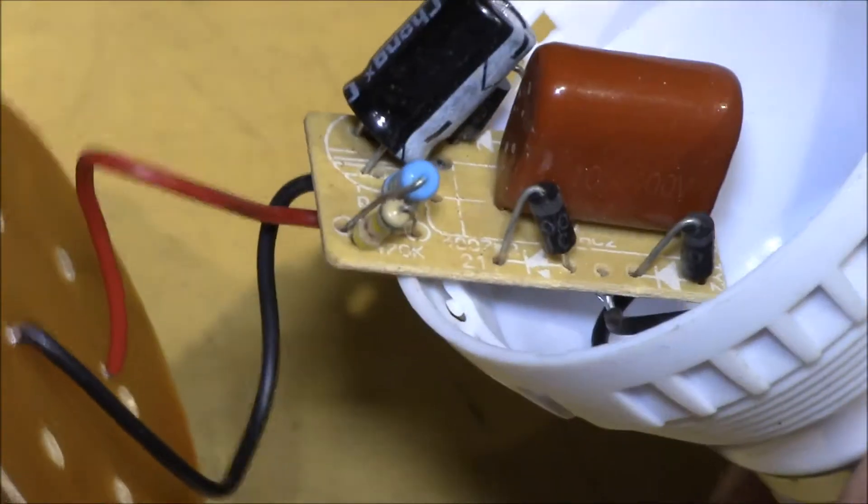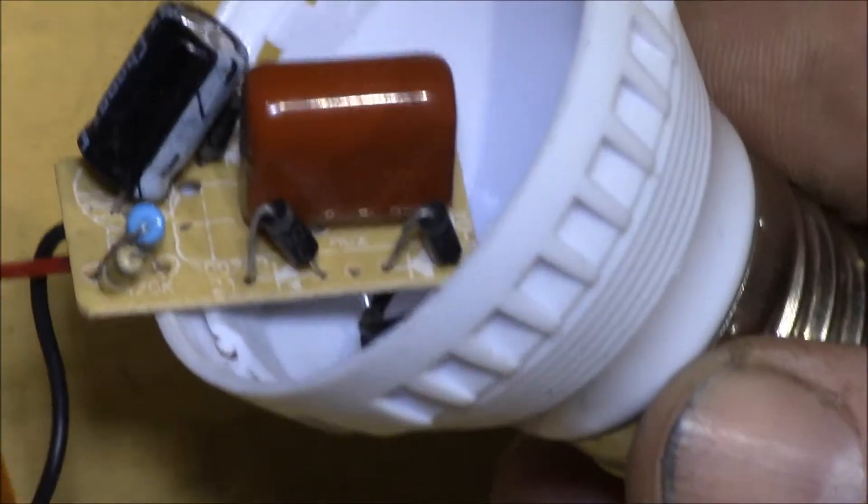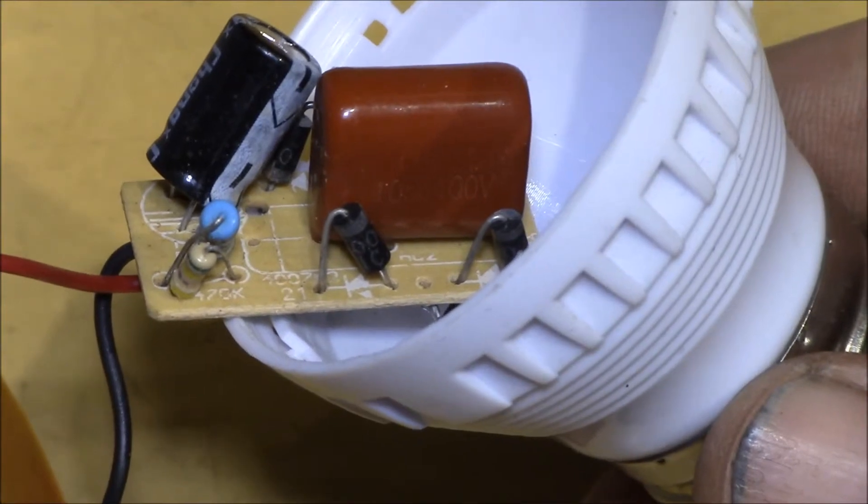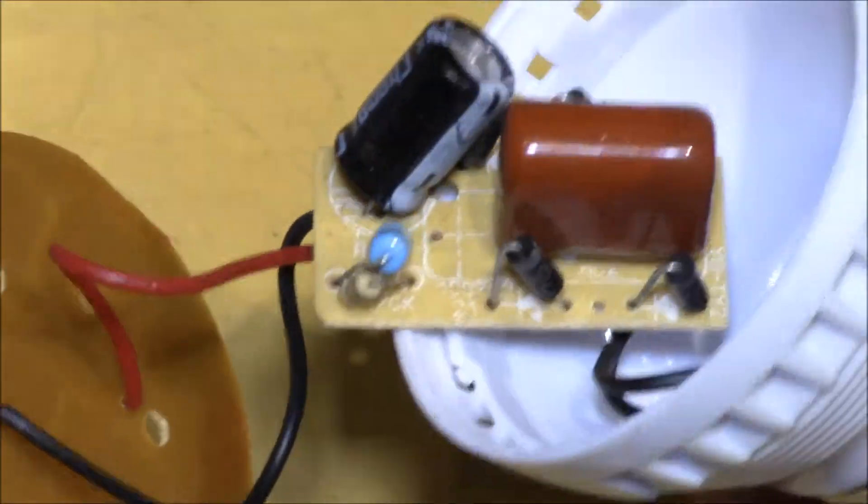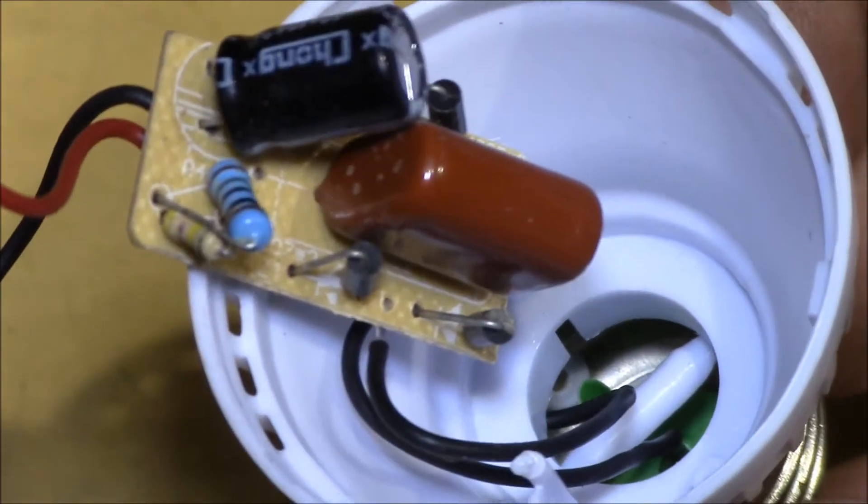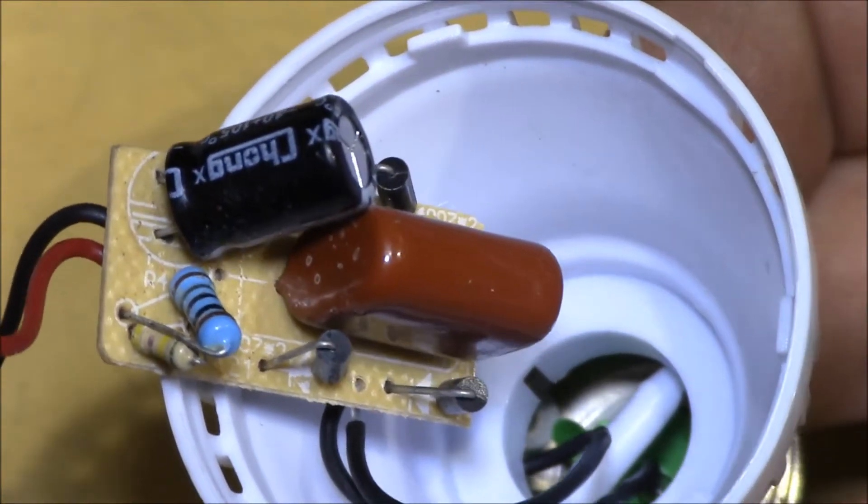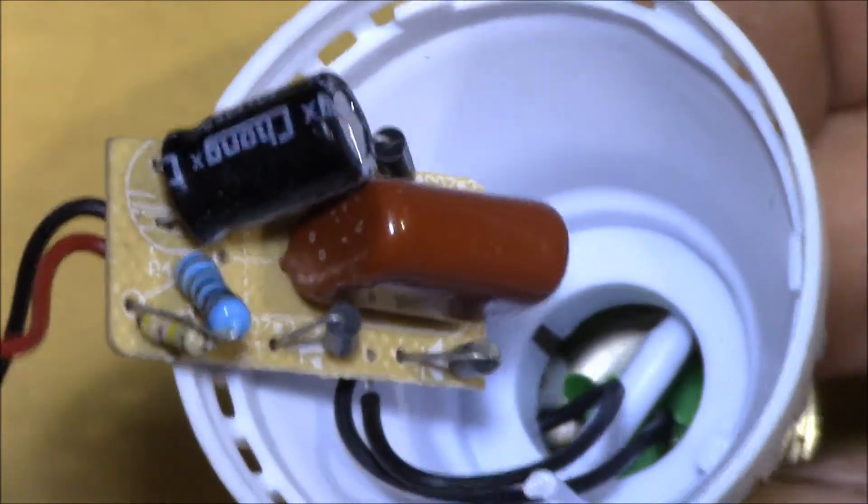There's a metalized film capacitor, that brown looking one, and then there's an electrolytic, and then two wires up to the LEDs. There's no transformer, there's no MOV.